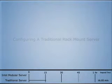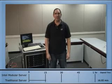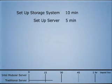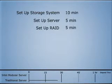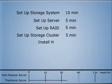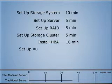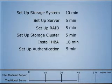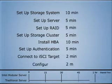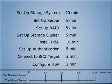Now that we're done with the physical installation, we can start the server configuration. This is a process that involves setting up the storage system and the server, setting up the RAID to protect the data on the disks, setting up the storage cluster to create our volumes, installing an HBA into our server, setting up authentication between the server and the volumes, and connecting the server to our iSCSI target on the storage host.